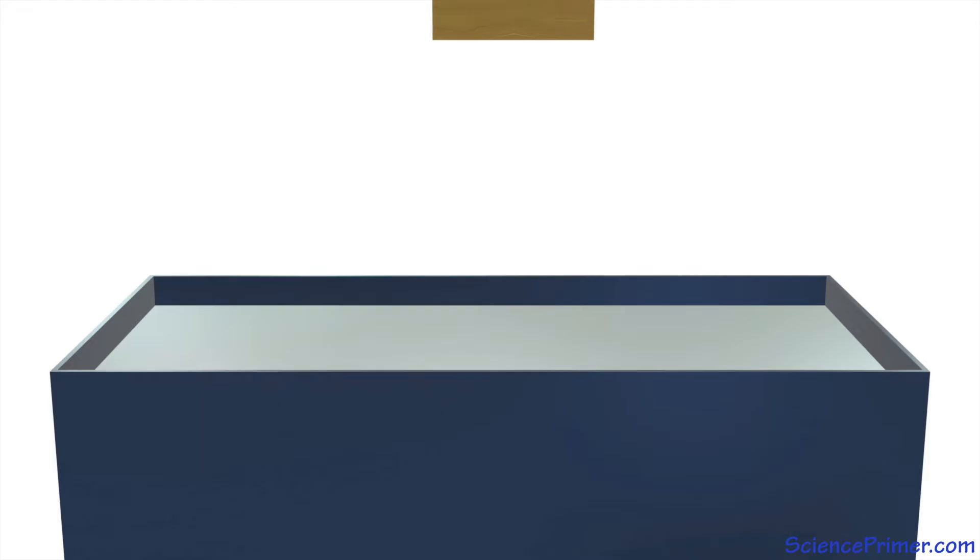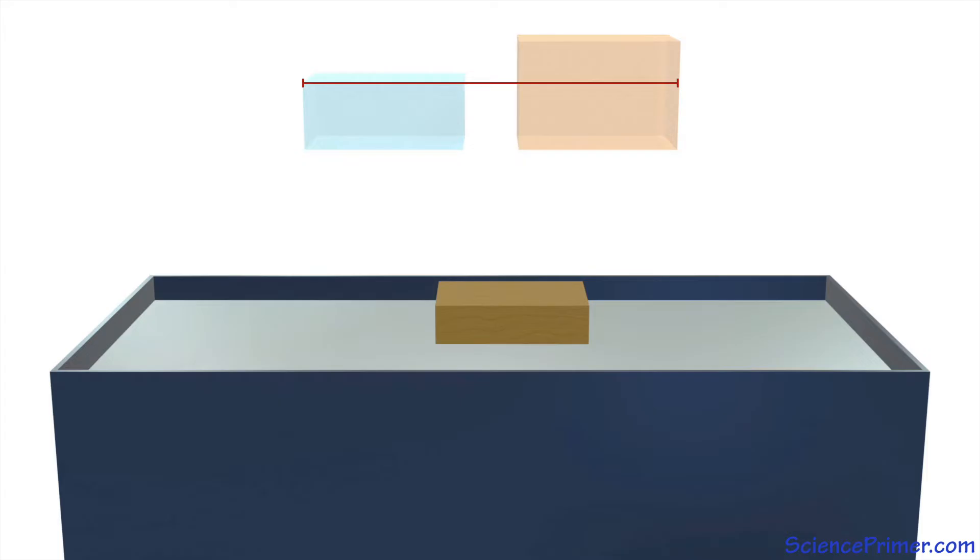When learning about buoyancy, we often analyze the behavior of a piece of wood placed into a container of water. The wood, which is less dense than the water, sinks until it displaces a volume of water equal to its mass. The wood floats because it is less dense than the water, so it stops displacing water before completely submerging.